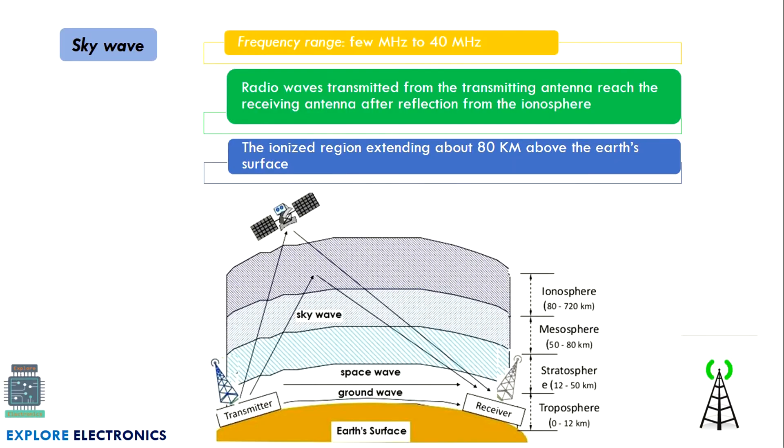The next one is sky wave. Sky wave is high frequency signal or high frequency transmission. Here the frequency is from a few megahertz to 40 megahertz. Signal flow is from the transmitting antenna to receiving antenna through reflection from the ionosphere.